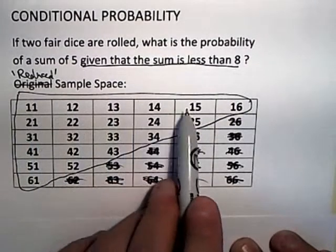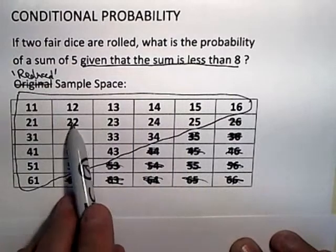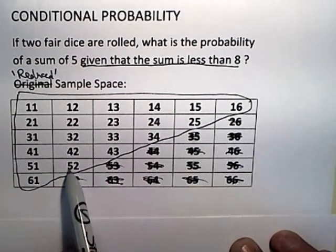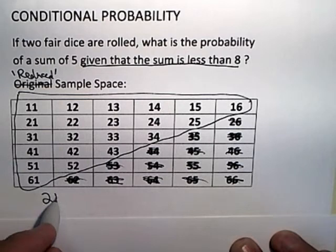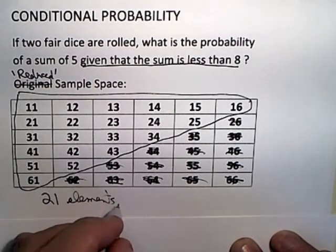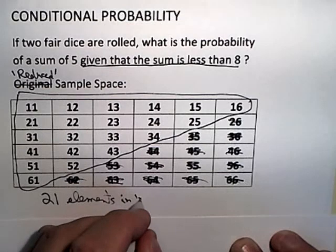These are 1, 2, 3, 4, 5, 6, 7, 8, 9, 10, 11, 12, 13, 14, 15, 16, 17, 18, 19, 20, 21 elements in that reduced sample space.